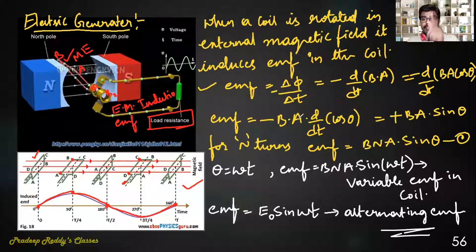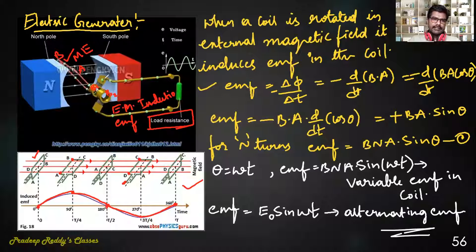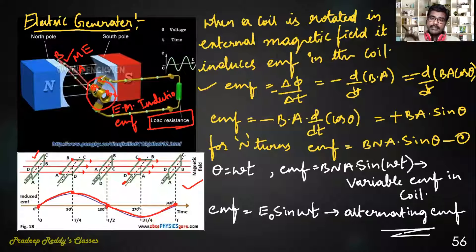This is an AC generator. If you replace the slip rings with a commutator, then the alternating EMF which is produced can be converted into direct EMF.